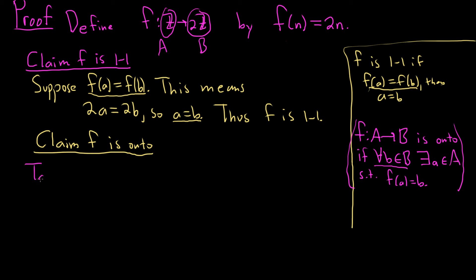Take any B in 2z. Well, 2z is a set of even integers. So that means B is equal to 2n for some integer n. That's what it means for an integer to be even. And we're just pretty much done. We just have to write down the final sentence.